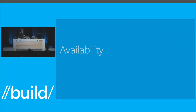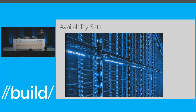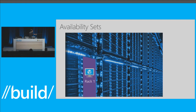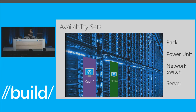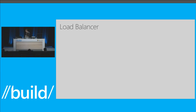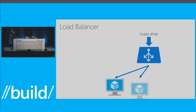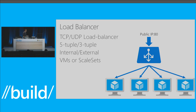Availability. The first concept, of course, is availability sets — being able to span across hardware. You can define availability sets, and it will deploy instances across multiple racks — distinct racks, distinct power units, distinct network switches, and distinct servers. Any of those items fail and the instance continues to run. Very important when deploying an application. Add on top of that the load balancer — being able to redirect and spread traffic across a set of instances.